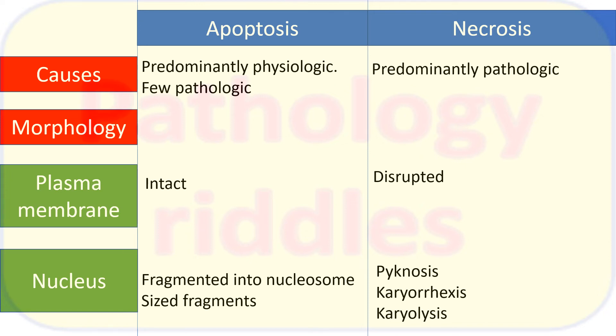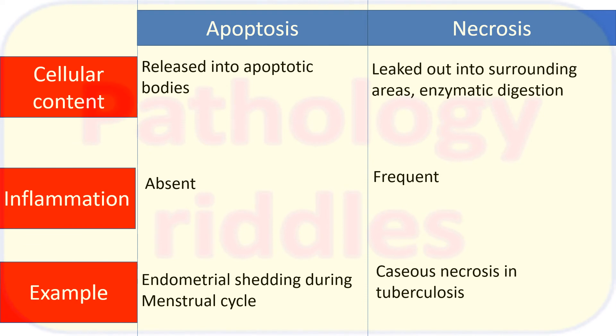In karyorrhexis the nucleus gets fragmented and broken off into multiple pieces; in karyolysis the nucleus itself gets dissolved. In apoptosis, cellular contents are released into apoptotic bodies. Apoptotic bodies have a membrane — the cell basically divides into multiple fragments surrounded by membrane.